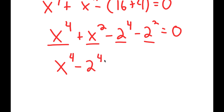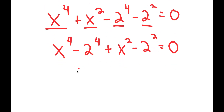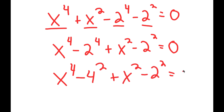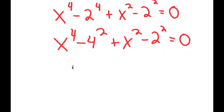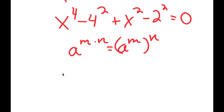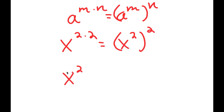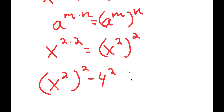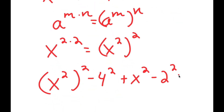Now I can put the powers of 4 together and the powers of 2 together. So I get x to the power of 4 minus 2 to the power of 4 plus x squared minus 2 squared. Now, using the property that a to the power of m times n equals a to the power of m to the power of n, x to the power of 4 is the same thing as x squared to the power of 2. So now I get x squared to the power of 2 minus 4 to the power of 2, plus x squared minus 2 squared, is equal to 0.